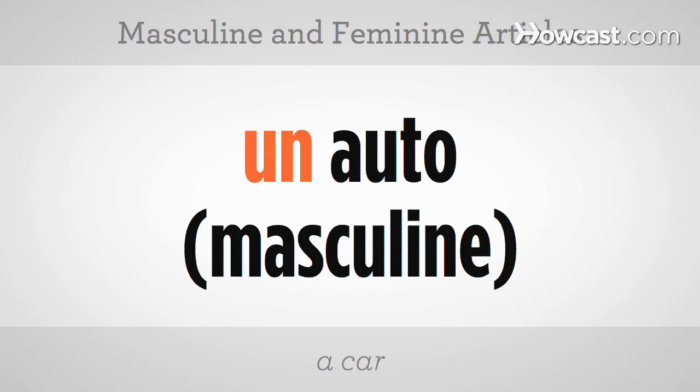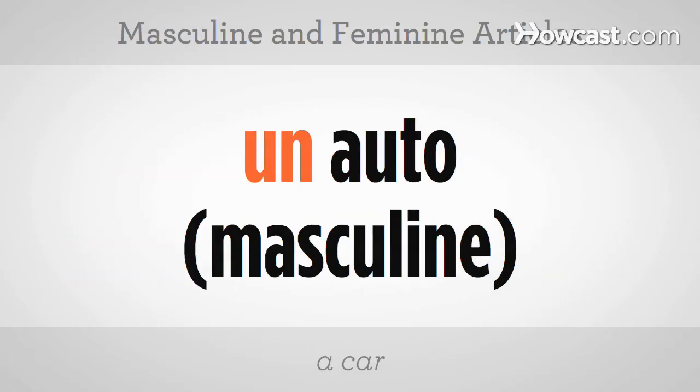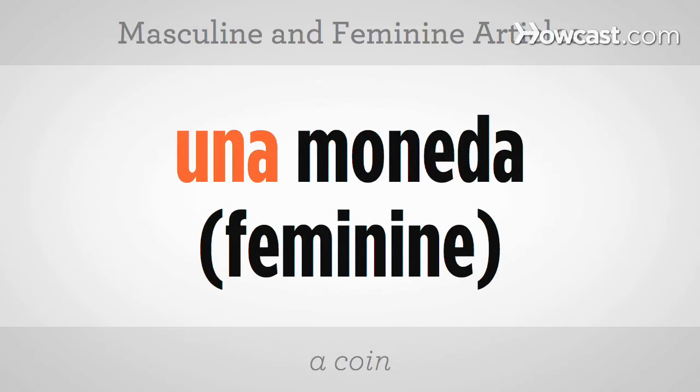Let's repeat: 'un libro,' 'un auto.' Now let's do the feminine: 'una casa,' meaning 'a house.' Let's repeat: 'una casa.' And 'una moneda,' meaning 'a coin.' Let's repeat: 'una moneda.'